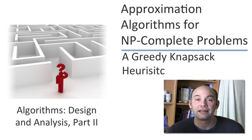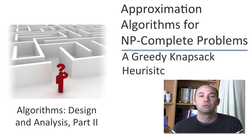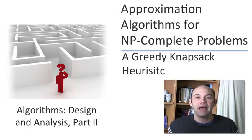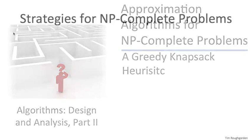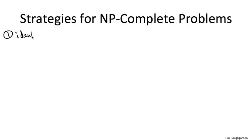This sequence of videos is about the design and analysis of heuristics, algorithms which are generally guaranteed to be fast but not guaranteed to be 100% correct. As a case study, we're going to revisit the knapsack problem that we thought about earlier in the dynamic programming section.